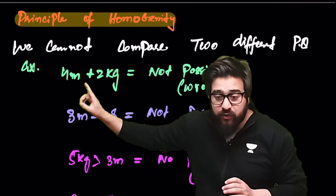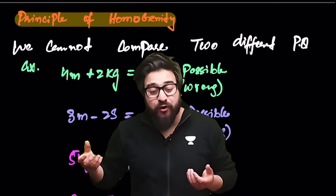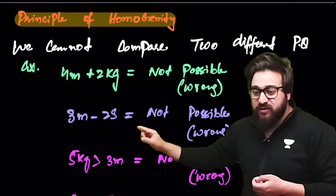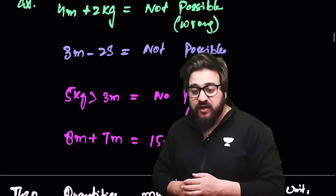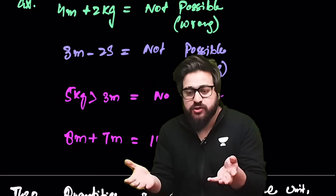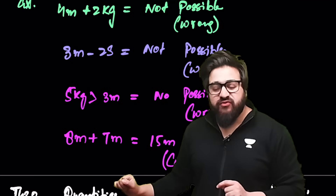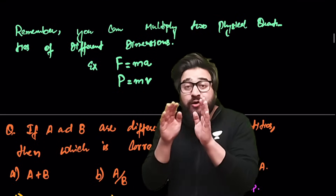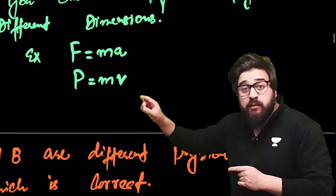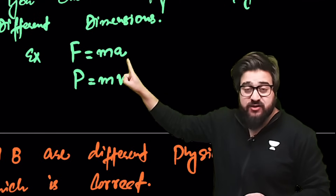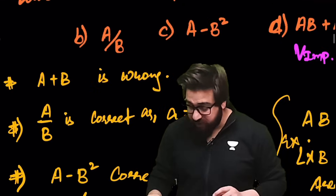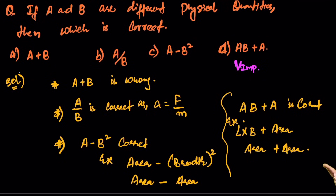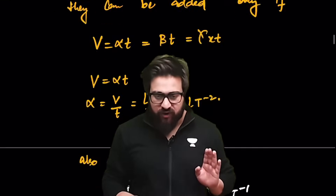The principle of homogeneity states that you cannot add or compare two different physical quantities. For example, 4 meters + 2 kg is illogical; 3 meters − 2 seconds is not possible. But 8 meters + 7 meters is valid because both have the same physical quantity. However, we can multiply different quantities — for example, force = mass × acceleration, momentum = m × v.